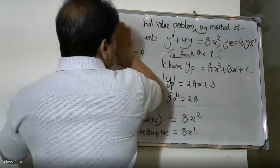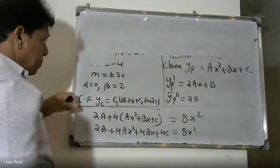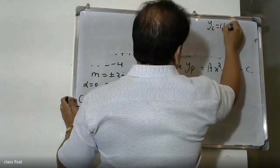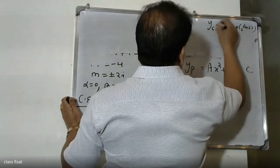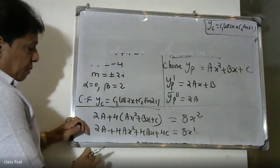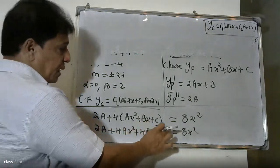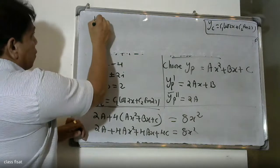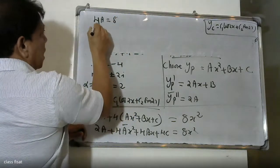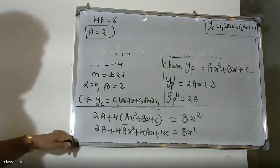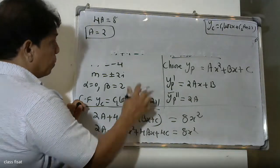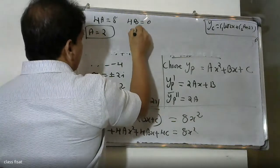Simplifying: 2A + 4Ax² + 4Bx + 4C = 8x². Comparing coefficients on left-hand side and right-hand side: the coefficient of x² gives 4A = 8, so A = 2. The coefficient of x gives 4B = 0, so B = 0.